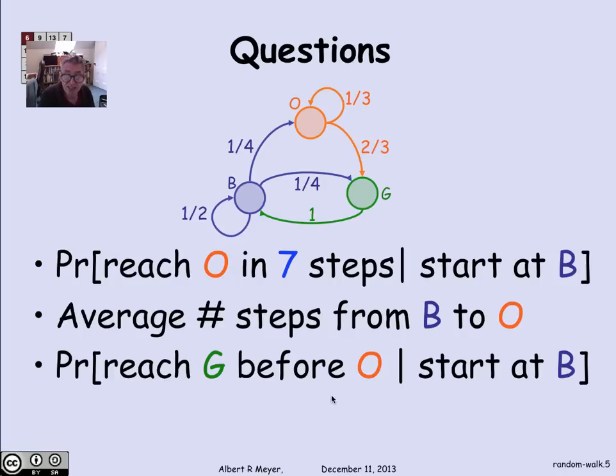And finally, you can ask a Gambler's Ruin type question. What's the probability of starting at B of getting to G before O? Well, in this trivial example, you can just read off the answer. You are going to get to G before O with 50-50 probability, because from B, you have to go one place or the other with equal probability. But in general, this becomes a more interesting and complicated question, which you can solve by methods that we're about to lay out.